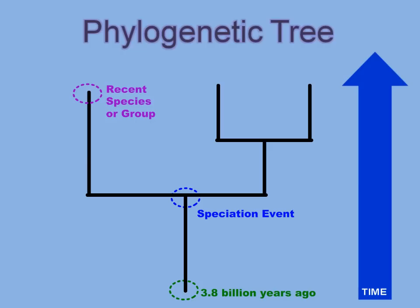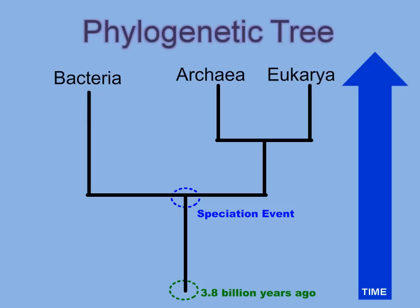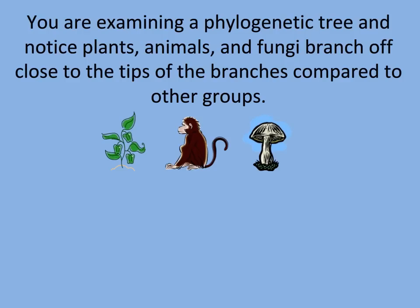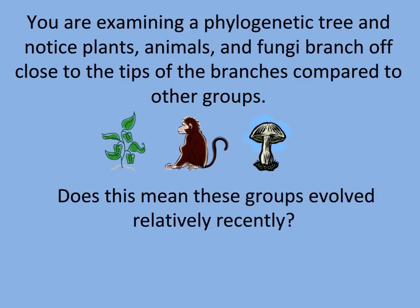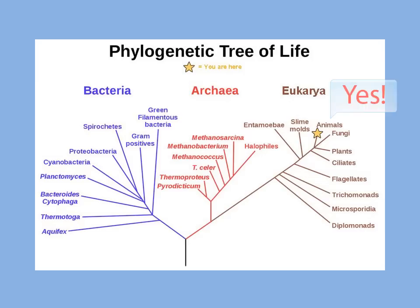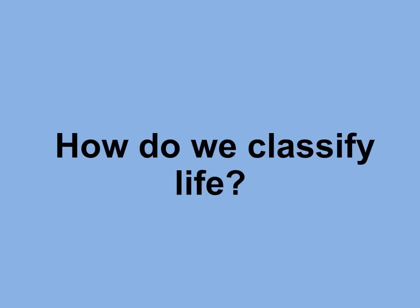The tips of the branches represent recent species or groups of related organisms. Here are the three domains of life: bacteria, archaea, and eukarya. Organisms in the domains bacteria and archaea are composed of prokaryotic cells, while eukarya contains organisms composed of eukaryotic cells. Phylogenetic trees can be represented in different ways and contain more detail, such as this one that shows major groups within the three different domains.